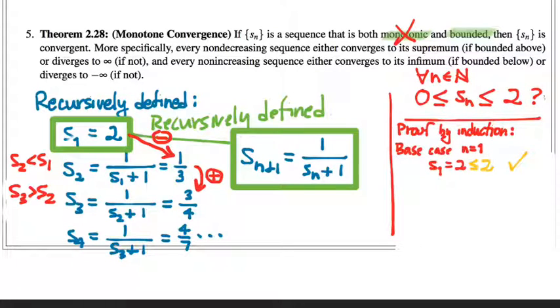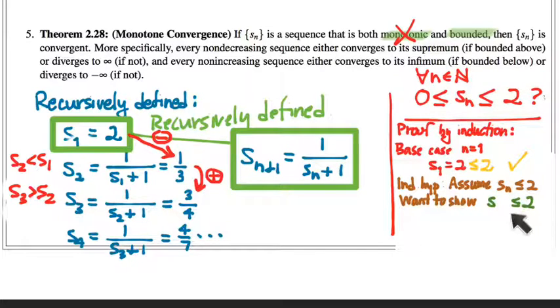So what comes next in a proof by induction? Yeah, the induction step. So we'll first write the inductive hypothesis, which says, let's assume that Sn is less than or equal to 2. And then we want to show, what do I want to show? Yeah, we want to show that the next term is less than or equal to 2. So that green thing is what we want to establish.